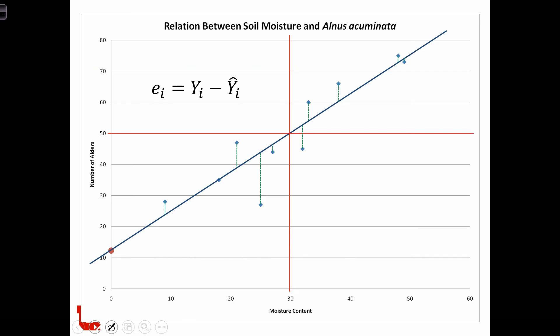In this illustration, we have a scatter plot. Each observation is a location of soil or a plot of land. On that plot of land, we know the moisture content of the soil and the number of alders that grow on that plot. We've drawn the regression equation as the best fitting line through the scatter plot of points.